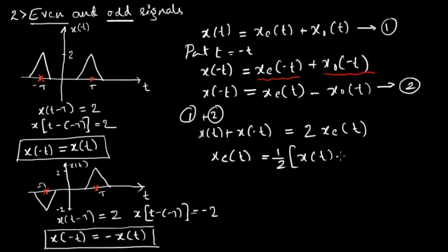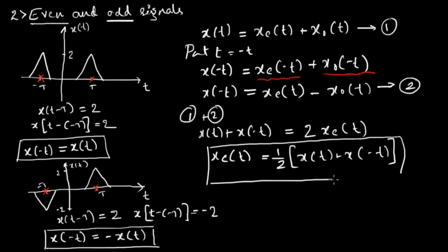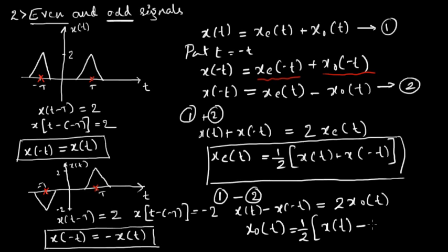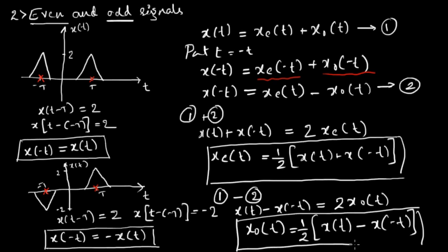Adding equation 1 and equation 2 gives x of t plus x of minus t, and we get the equation for the even part of the signal: x_e of t equals one half times x of t plus x of minus t. If we subtract equation 2 from equation 1, the even part cancels out and we get two times x_o of t, giving us: x_o of t equals one half times x of t minus x of minus t. This is the equation for the odd part of the signal.